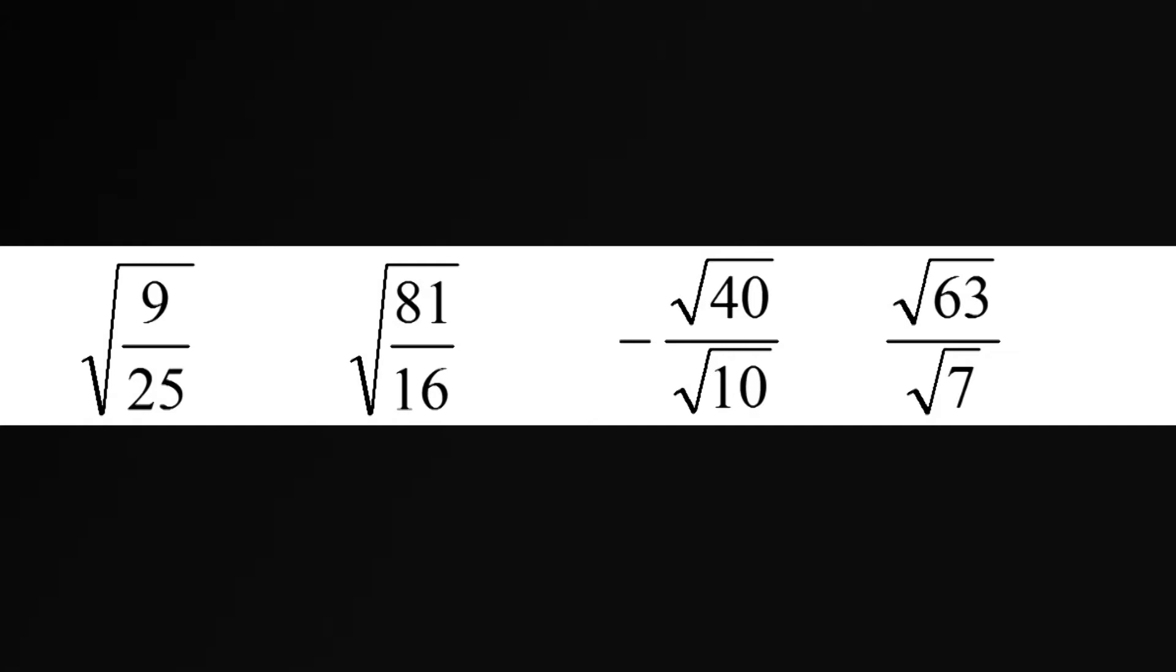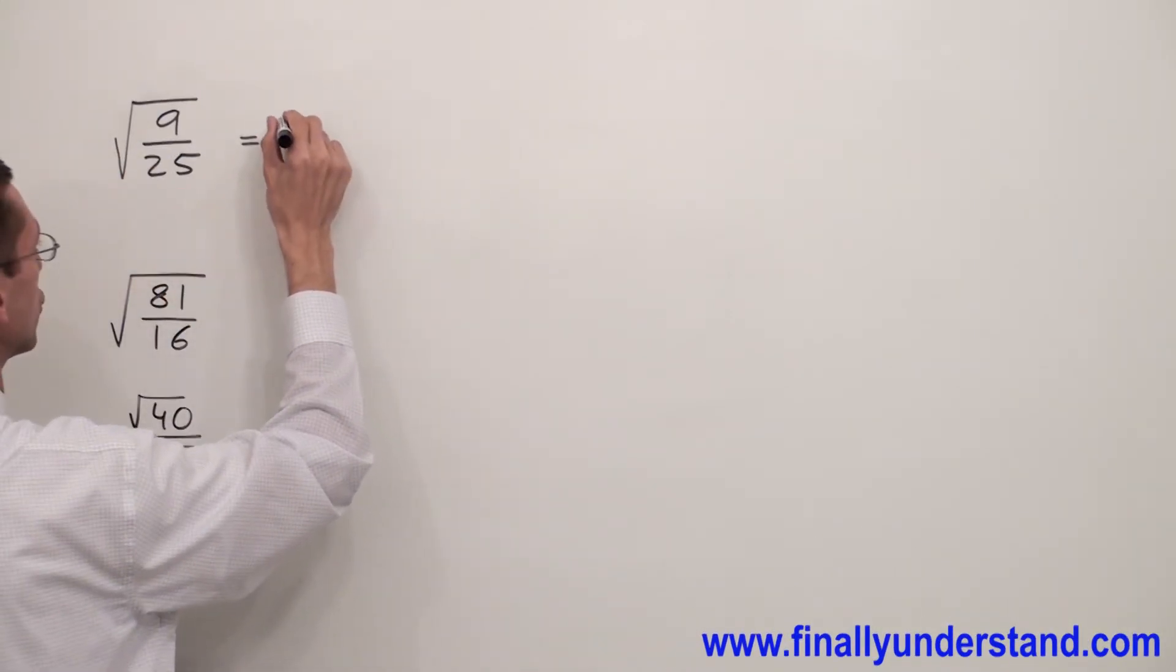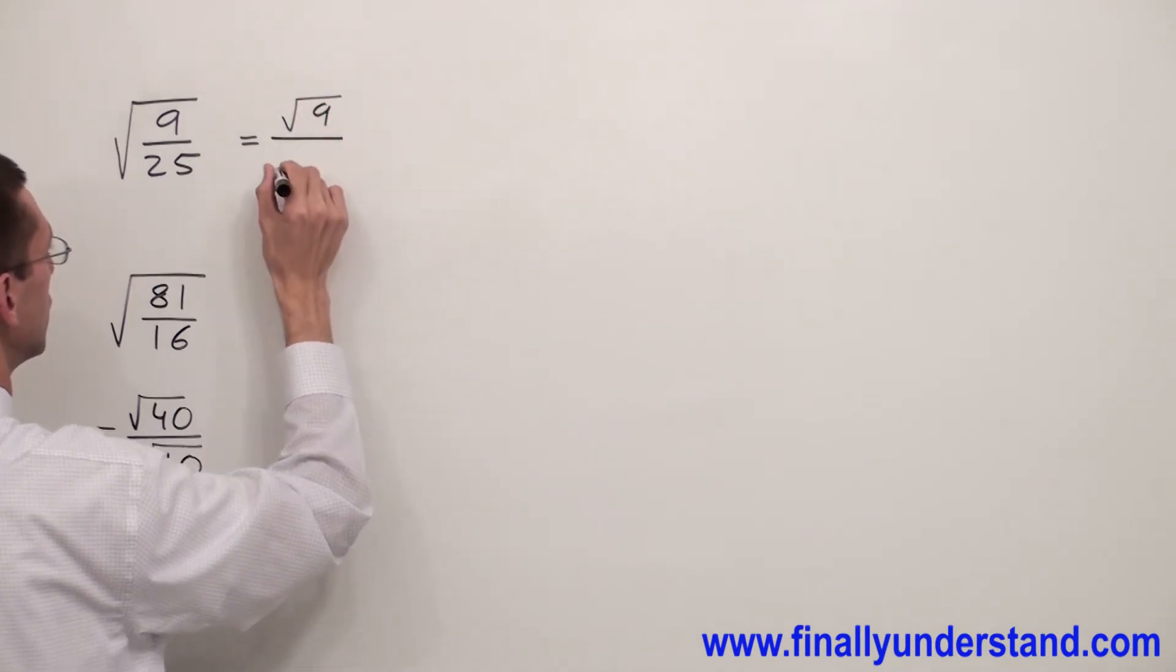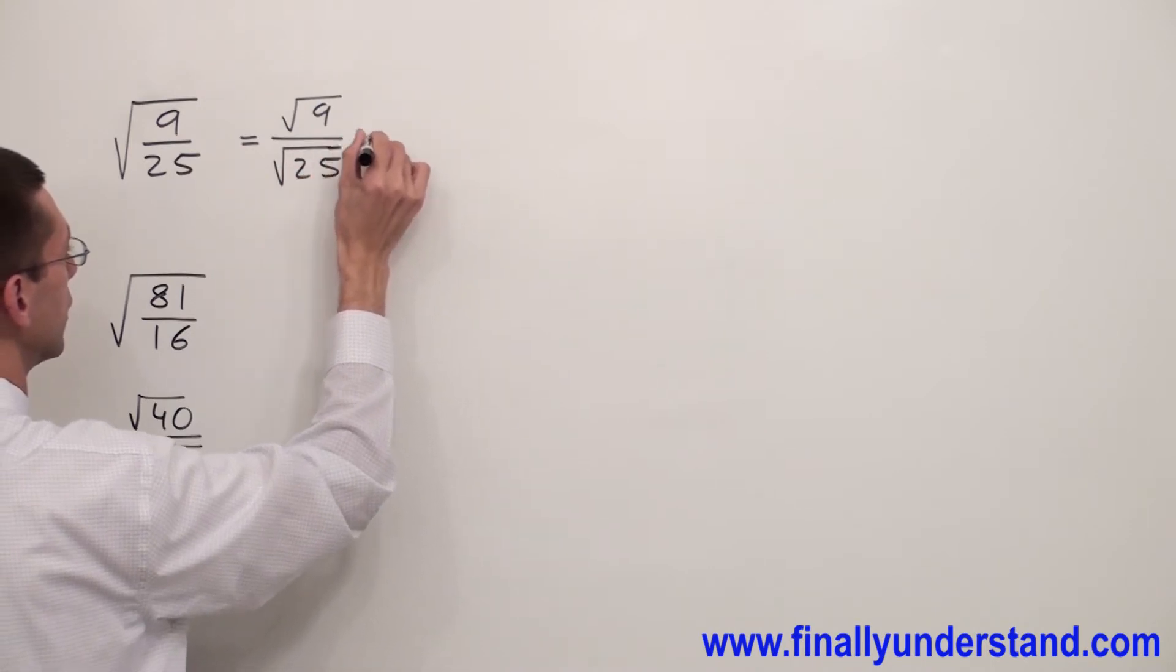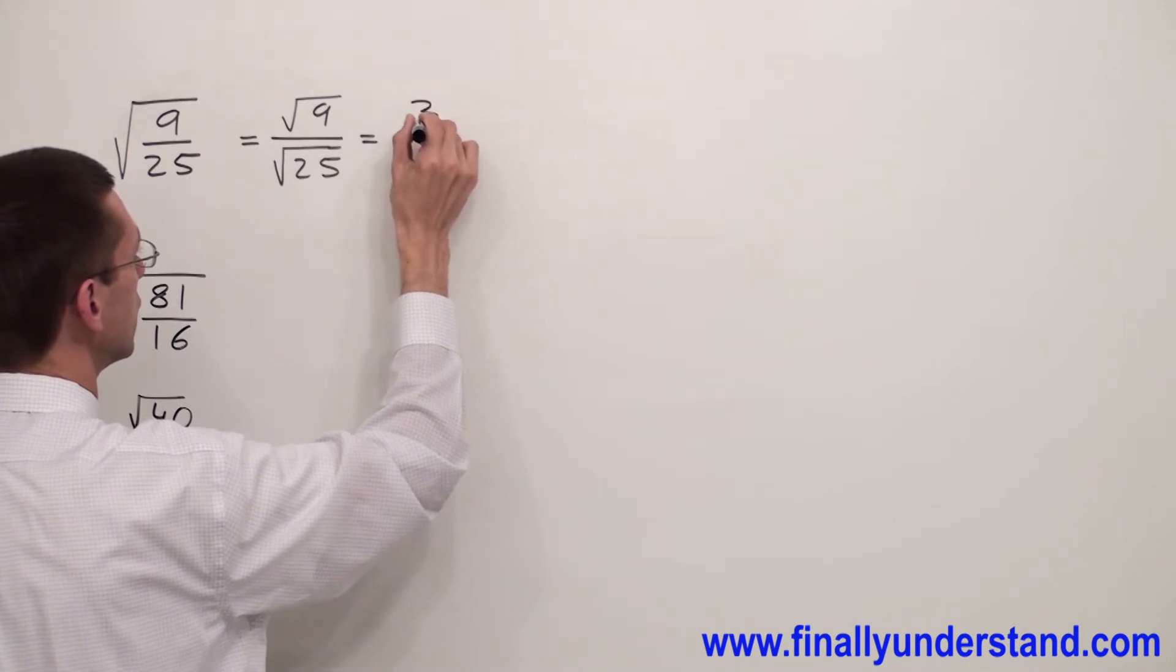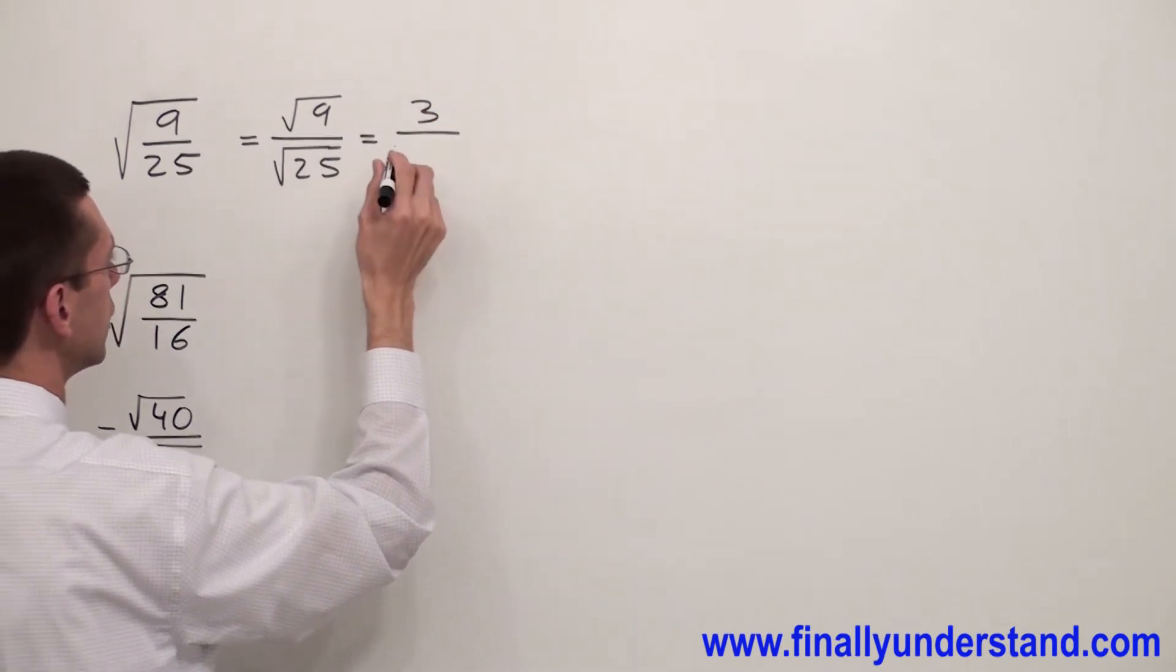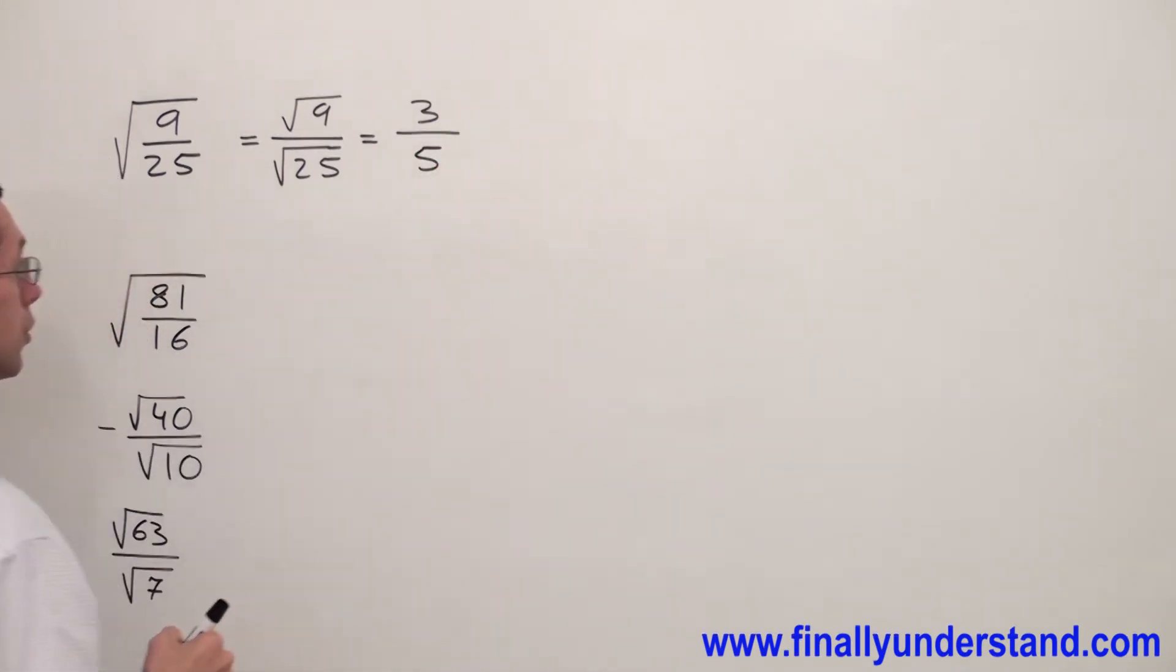We're supposed to use the properties of radicals. Remember, any time we have a radical of a fraction, we can rewrite this as square root of 9 over square root of 25. We have learned that square root of 9 equals 3, and square root of 25 is 5. This is the solution to my problem.